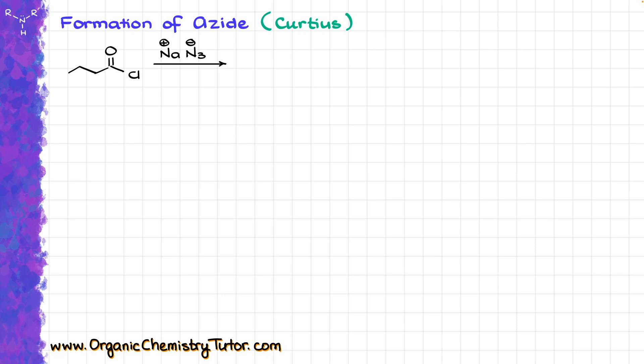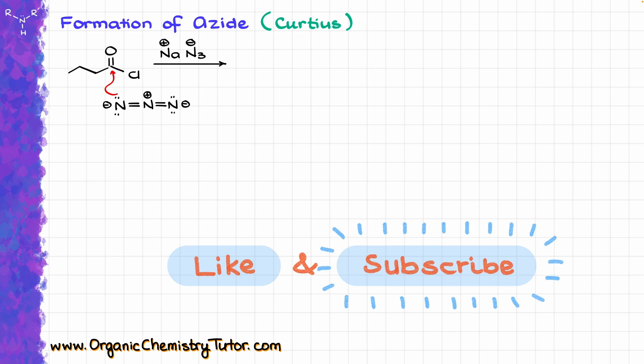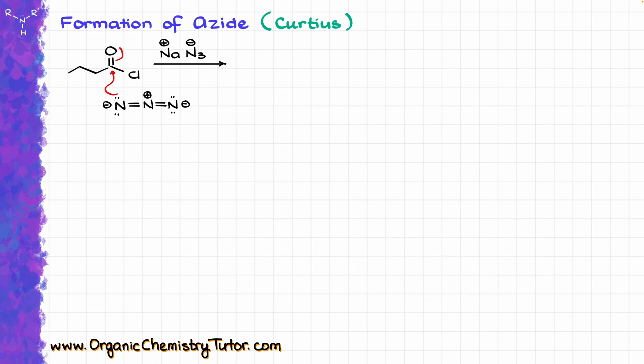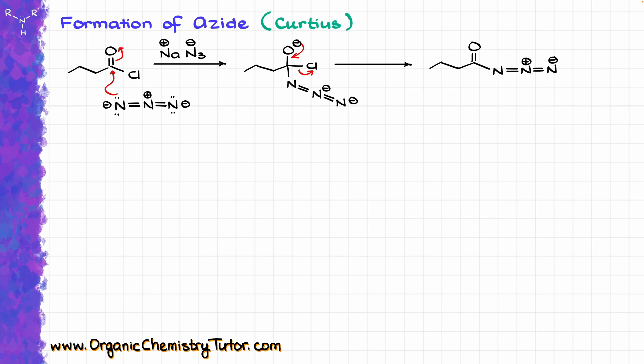Coming back to the reaction: azide is an excellent nucleophile. This N3⁻ species is going to react with my carbonyl, attacking it directly, giving a tetrahedral intermediate. Then from that tetrahedral intermediate, we kick the chlorine out, giving us the organic azide as the product of this step.